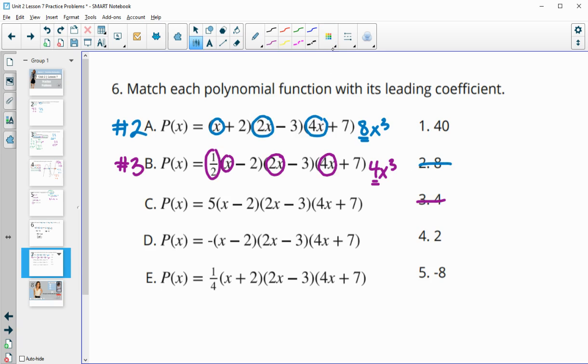Next one, we would have 5 times x times 2x. So 5 times x is 5x times 2x is 10x squared, times 4x is 40x cubed. So that lead coefficient is just the 40. That's number 1.